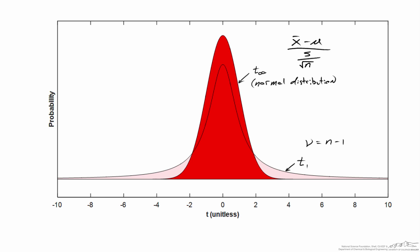As the number of samples gets larger — starting out with a sample size of 2, then 3, and so on — the t-distributions become more and more normally distributed. One important thing to pay attention to is that the width of the tails in the t-distribution becomes shorter and shorter, and that's really important when we use t-distributions for statistics.